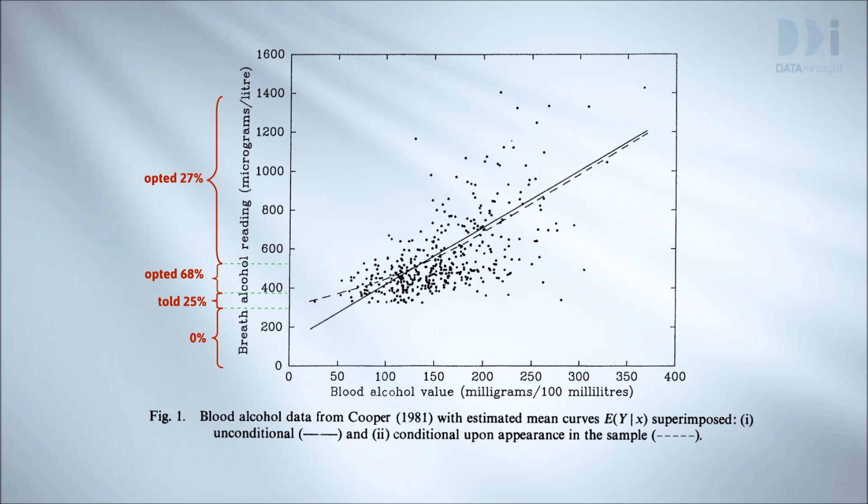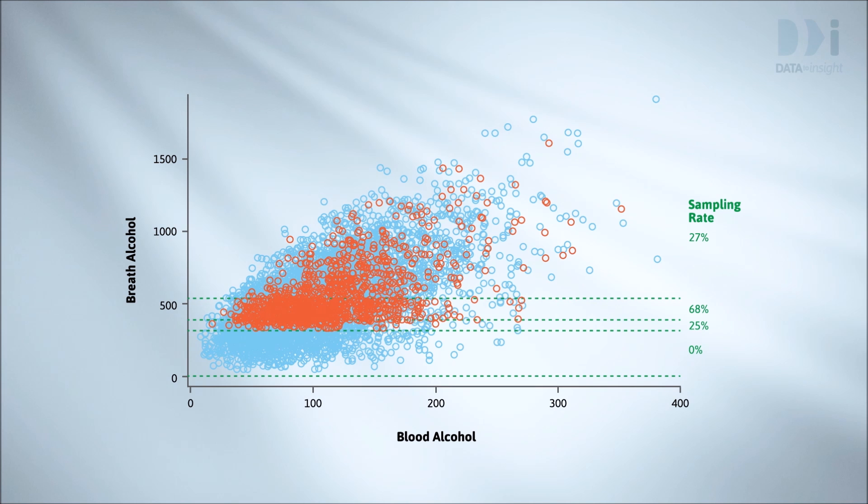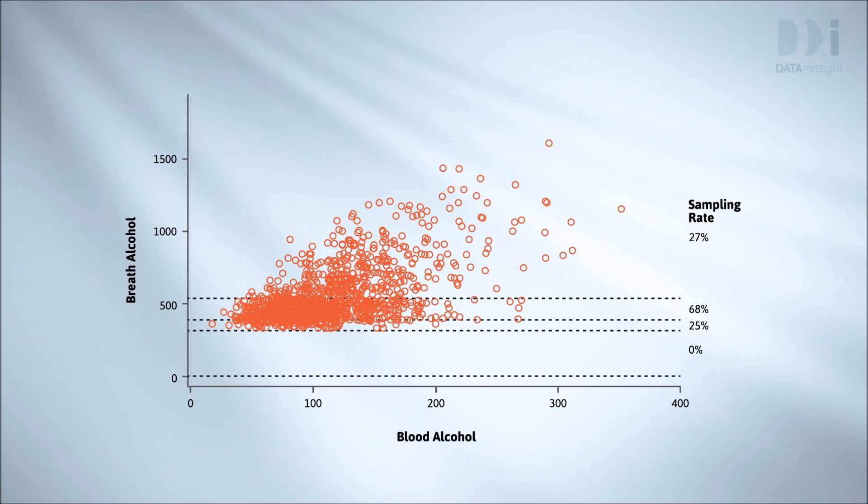Now I claim that this gives a distorted picture of the relationship between breath alcohol and blood alcohol. I'll demonstrate using a computer simulation. Here we've generated a set of 4000 readings to form a computer generated population. This plot shows the relationship between their breath alcohol and blood alcohol values. The trend is linear. Here I've randomly selected people to have blood tests according to the percentages in the real data. I've coloured the ones who got selected orange.